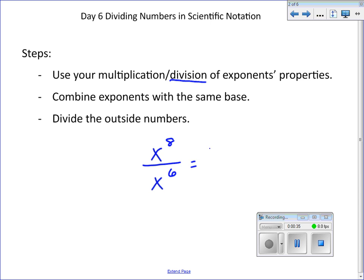you can just write out all of the x's. So we've got eight on top and then six on bottom. And then we cancel, and you're left with two on top. So we called that x to the second power.